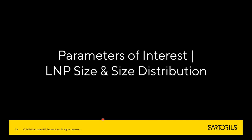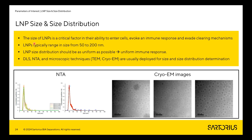Now I want to touch on the second parameter that can be determined using this system: LMP size and size distribution. The size of LMPs is usually quite important, especially for determining their ability to enter cells. LMPs are typically in the size range from 50 to 200 nanometers, and it is desirable that they have as uniform a size distribution as possible.